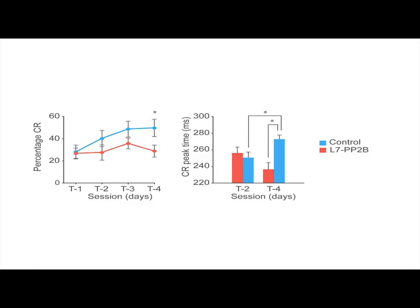When we subjected the mutants to this task, we found, indicated here on the left, that they were not as successful in developing conditioned responses as the control animals. Moreover, as indicated here on the right, they also showed deficits in the timing of the few conditioned responses that were still visible. So the mutants also showed significant impairments in Pavlovian eyelid conditioning.